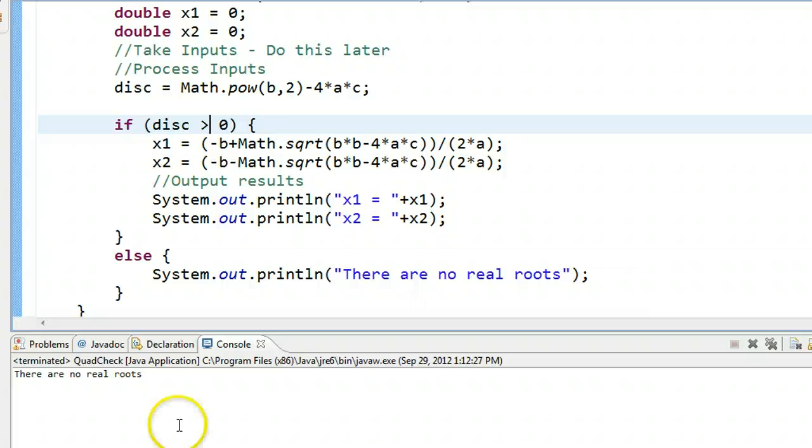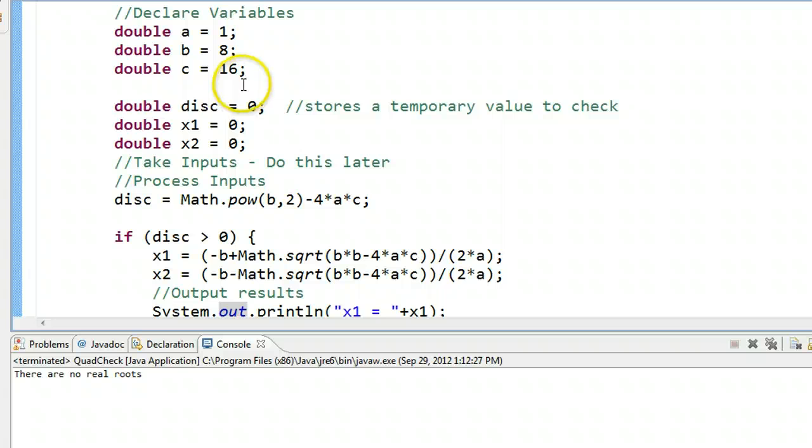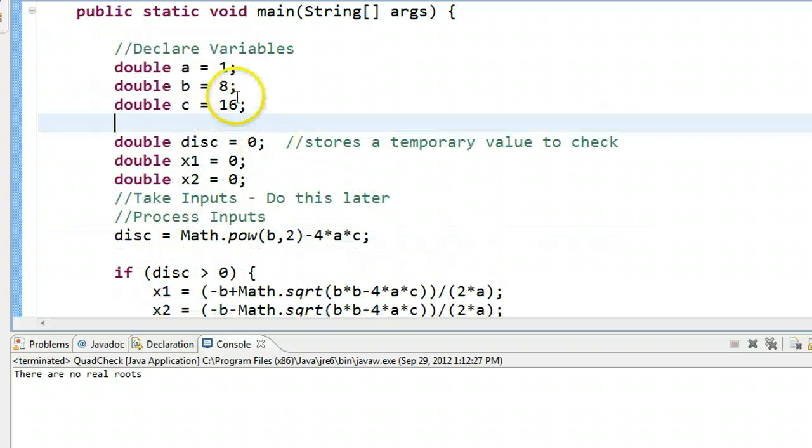So if I run this now, I get there are no real roots. But we know that's not correct because I have the values 1, 8, and 16.